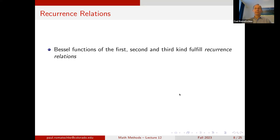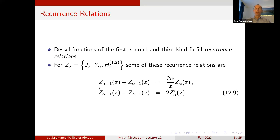One should also note that the Bessel functions of the first, second, and third kind all fulfill the same recurrence relations, given as equation 12.9. If Z collectively denotes any one of these Bessel functions, then Z_{α−1} + Z_{α+1} = (2α/z) Z_α, and Z_{α−1} − Z_{α+1} = 2 Z'_α.